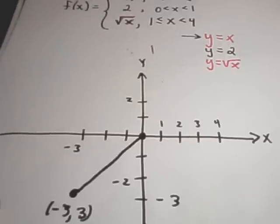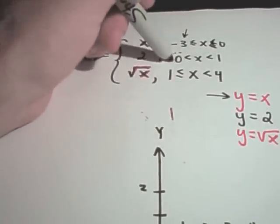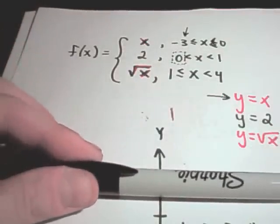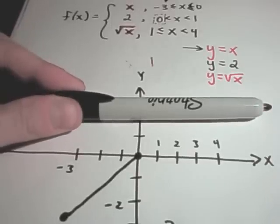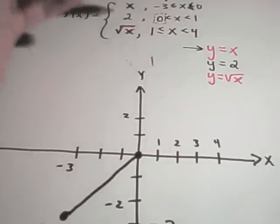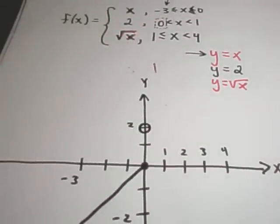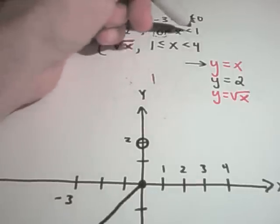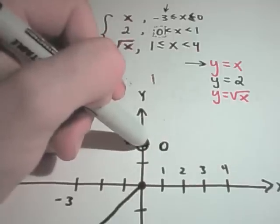For y equals 2, I'll graph everything in black. The function y equals 2 is a flat horizontal line at y equals 2. Since it's strictly less than at the boundary, we use open circles. The graph runs as a horizontal line at y equals 2 up until x equals 1, where we place an open circle, then connect the dots.